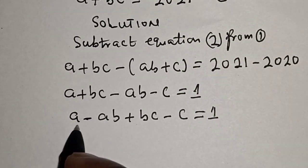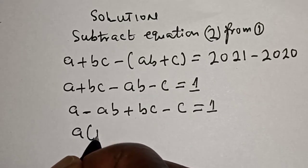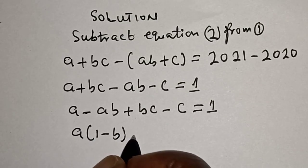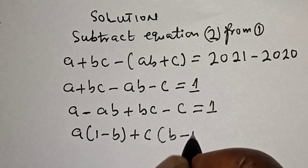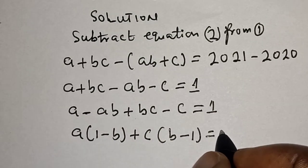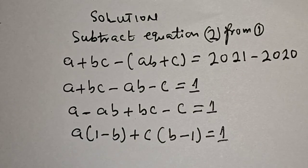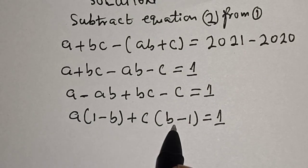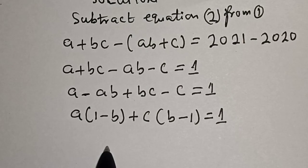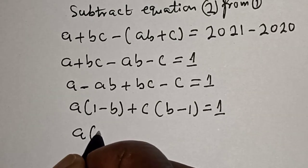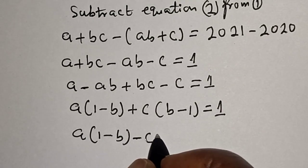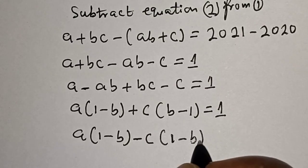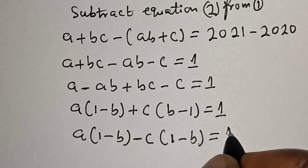Now from here, A is common: A(1 − B). From the other part, C is common: C(B − 1) equals 1. In order to transform (B − 1) to (1 − B), the equation becomes A(1 − B) minus C(1 − B) equals 1.